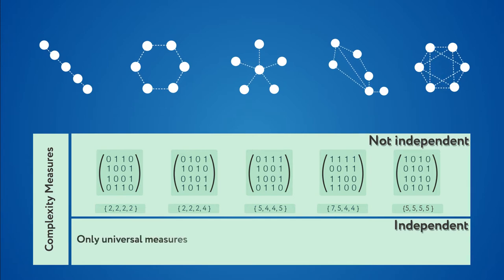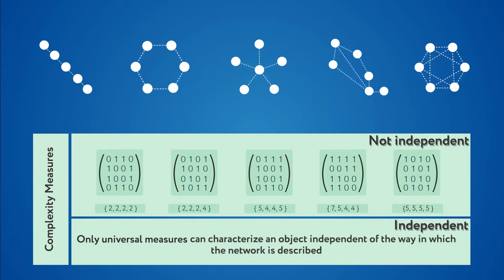Only universal measures of complexity based on the notion of a computer program can characterize the object independent of the way in which the network is described. These universal and powerful measures introduced by mathematicians exist, but they are very hard to estimate numerically.